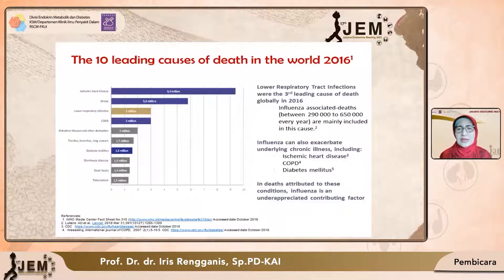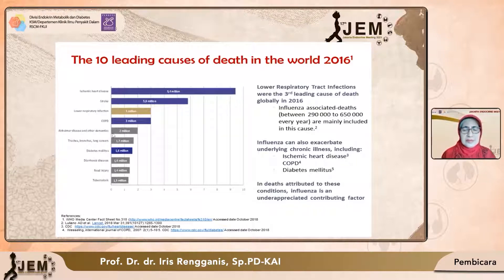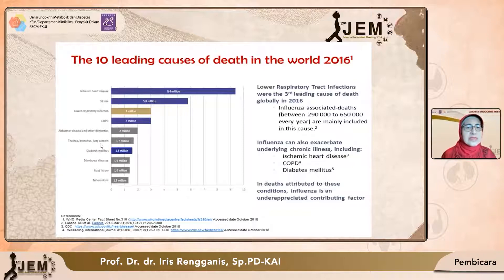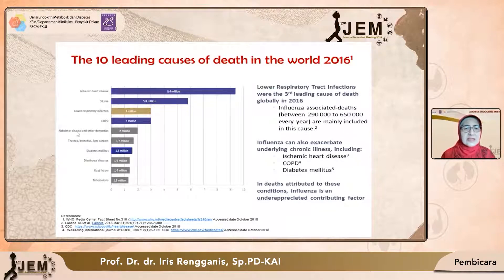Influenza merupakan salah satu dari 10 penyakit terbanyak yang menyebabkan kematian — data tahun 2016. Penyakit-penyakit utama itu adalah iskemik kardiak, stroke, infeksi saluran napas bawah, COPD, demensia, lung cancer. Namun di sini muncul penyakit diabetes — diabetes merupakan salah satu penyakit yang terbanyak menyebabkan kematian di tahun 2016 dikarenakan adanya influenza. Diabetes ini merupakan satu underlying chronic illness.